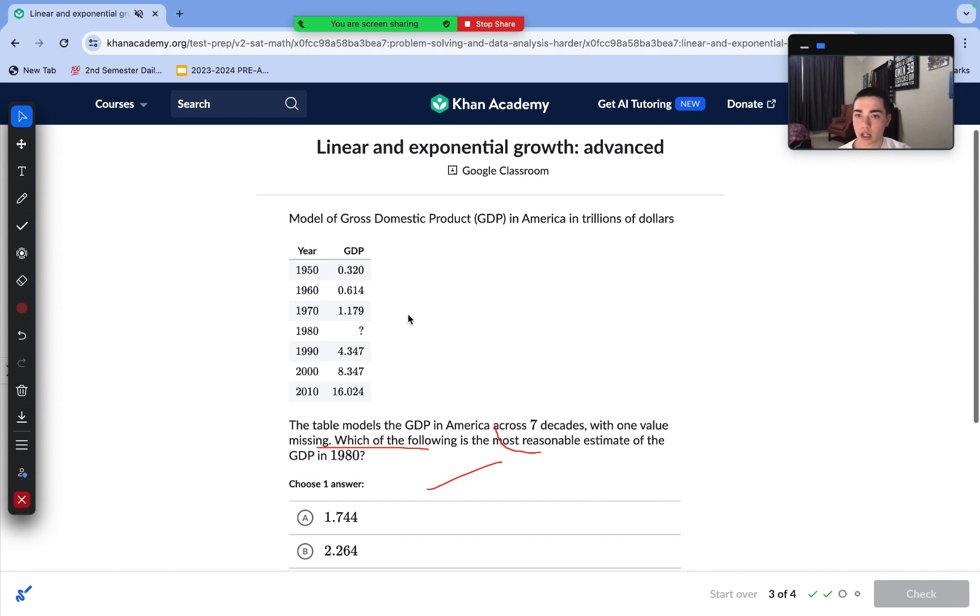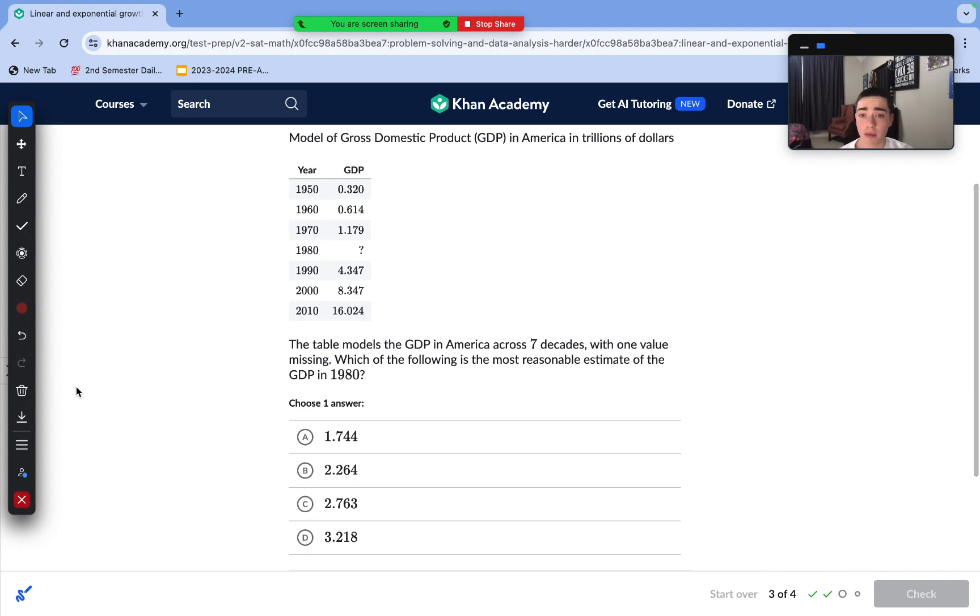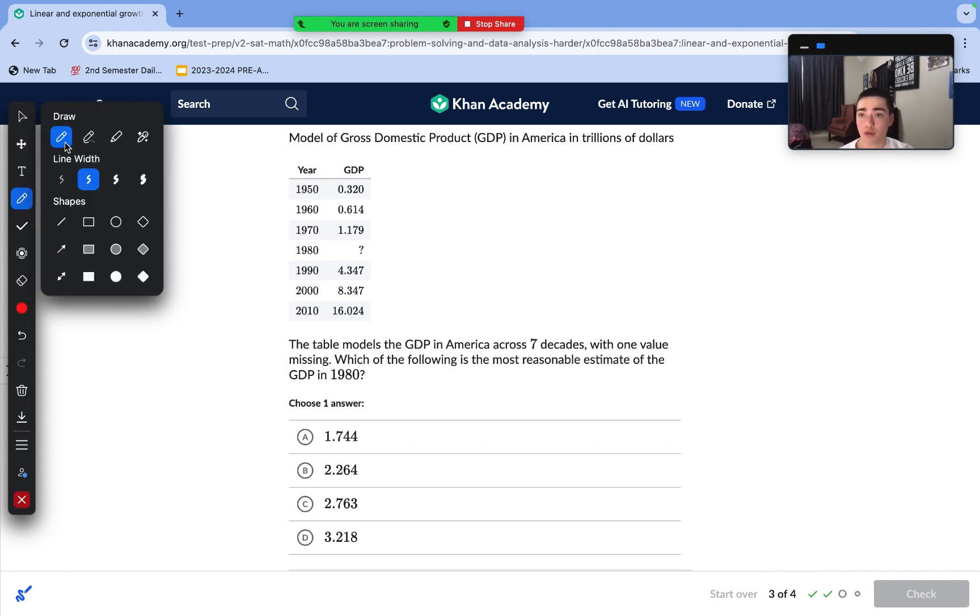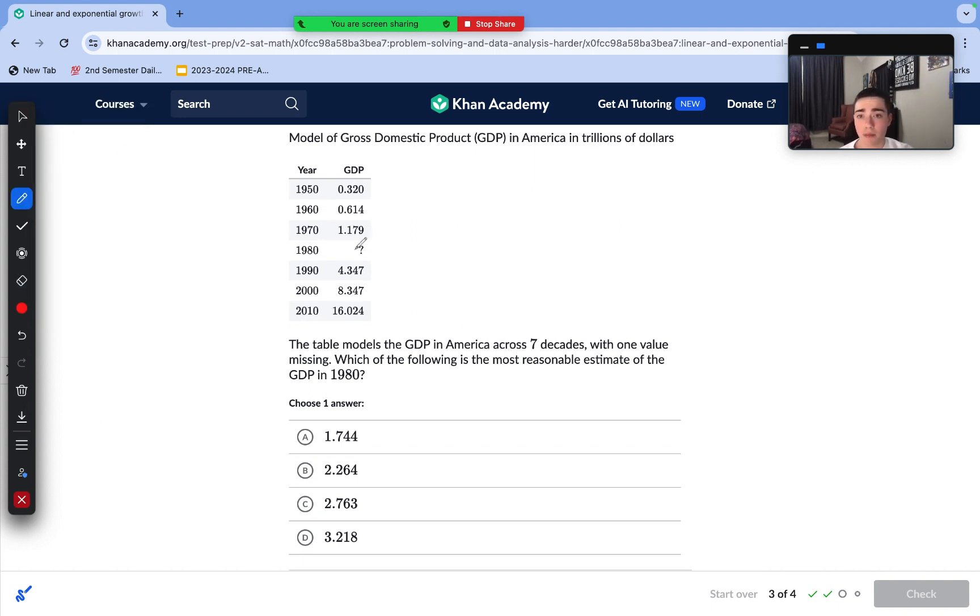On to question number three. We are given the GDP in America in trillions of dollars over time, and we are trying to find the most reasonable estimate for the GDP for this missing value. As we may notice, we seem to be multiplying by a common factor each year. It's a little bit less than multiplying by 2, if we notice here. And we can confirm this by going ahead and dividing some of these values.